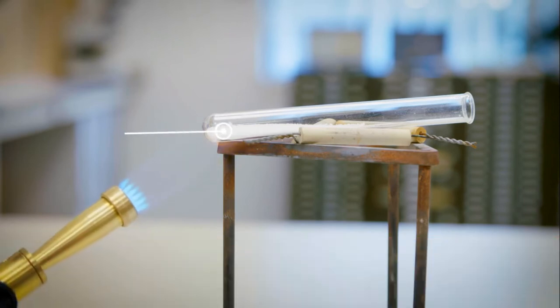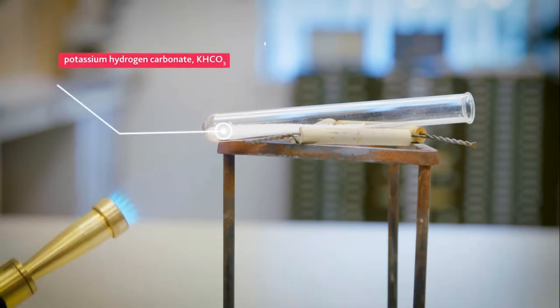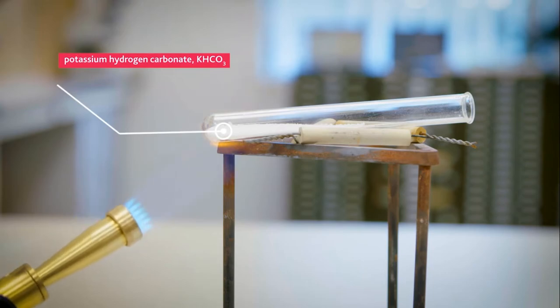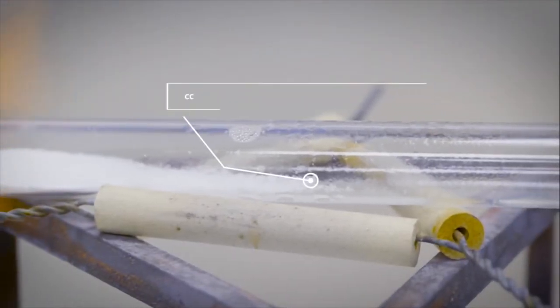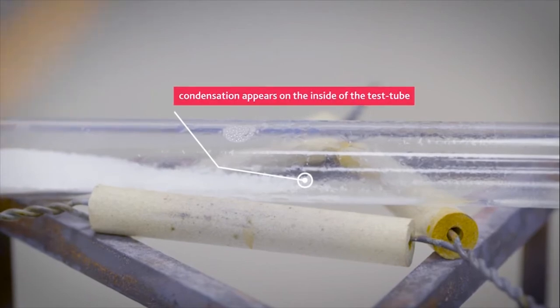When potassium hydrogen carbonate is heated strongly, it decomposes. During its decomposition, the water produced can be seen condensing on the inside of the tube.